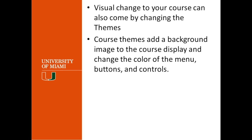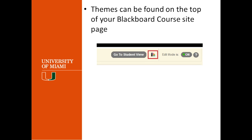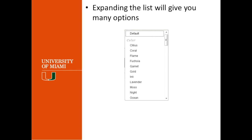Visual changes to your course can also come by changing the theme. Themes add a background to your course with images, colors, buttons, and so on. This is where you will find the course theme — if you look at your course site right next to the Go to Student View button, you have the theme button right there. Once you click that button, you will get a drop-down, and you can scroll all the way down. There are over 50 different themes in Blackboard.